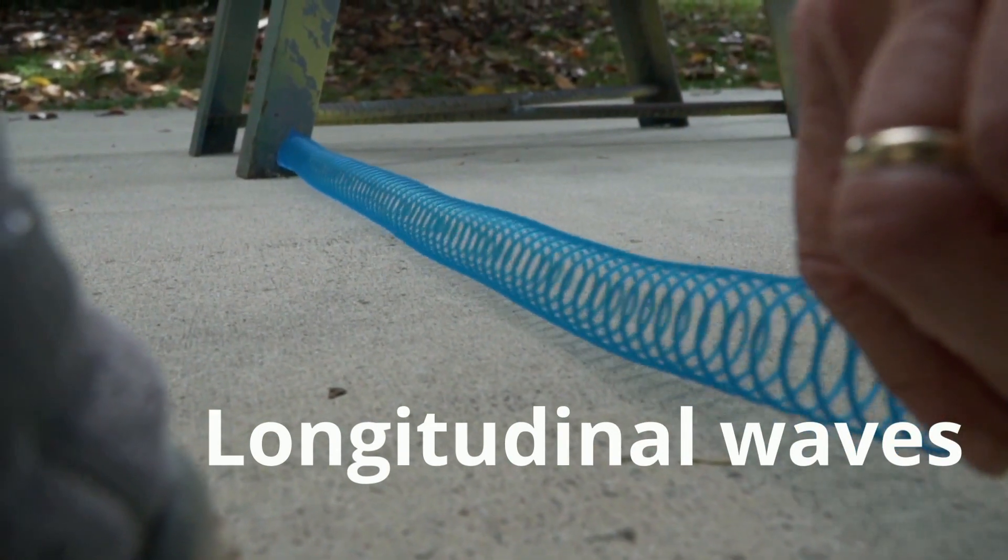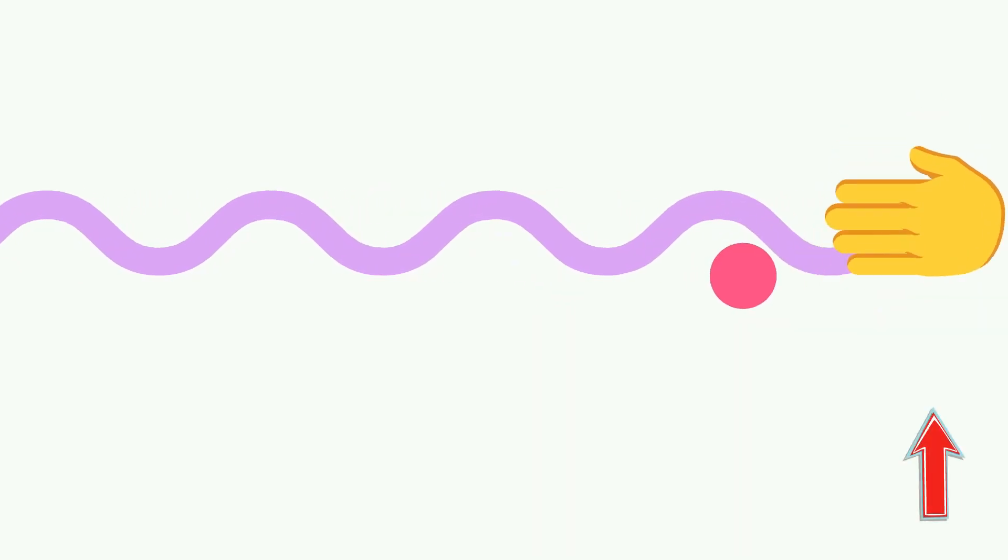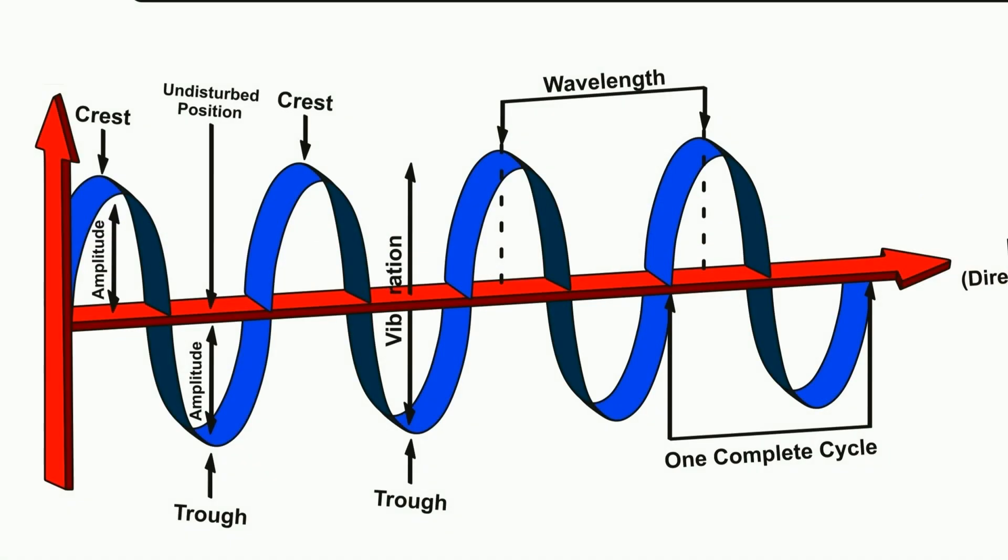First, with transverse waves, the particles in the medium move back and forth at right angles to the direction of the wave. And here's the anatomy of a transverse wave.